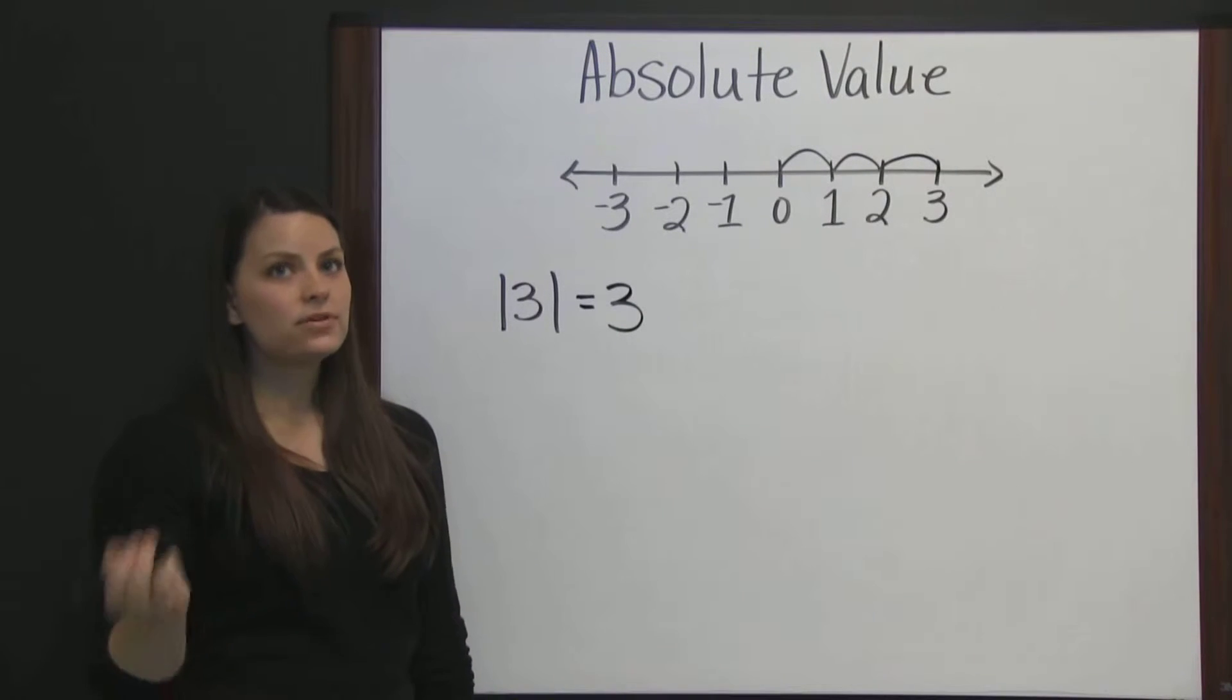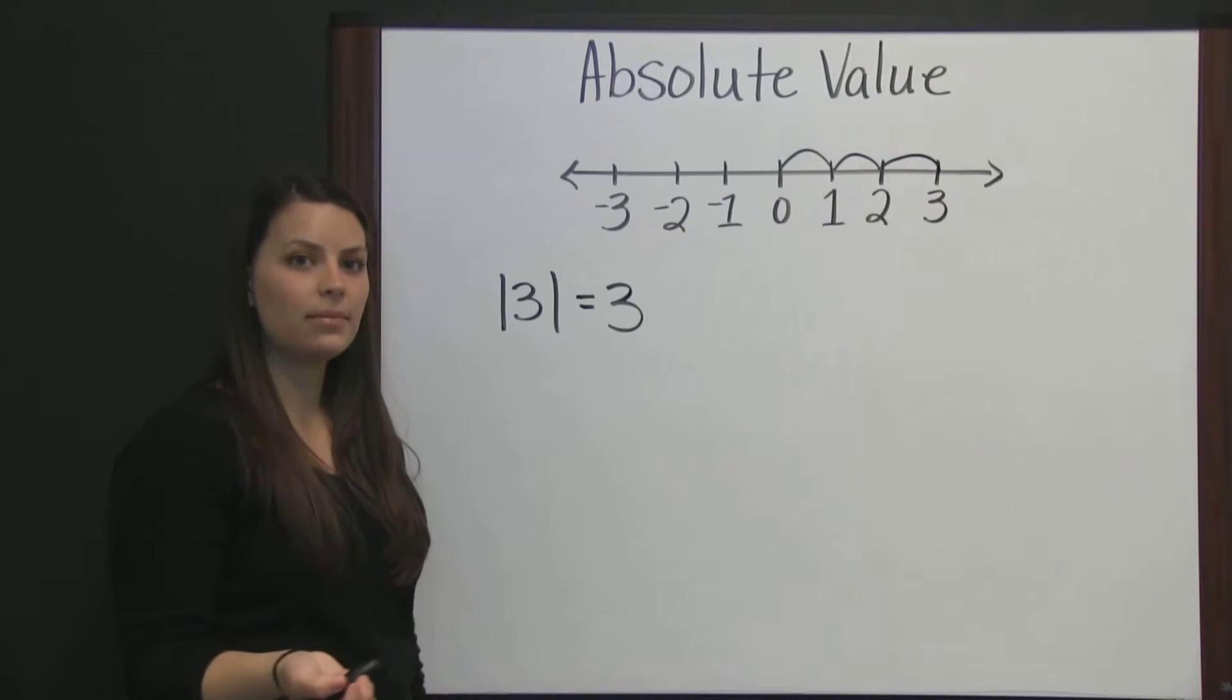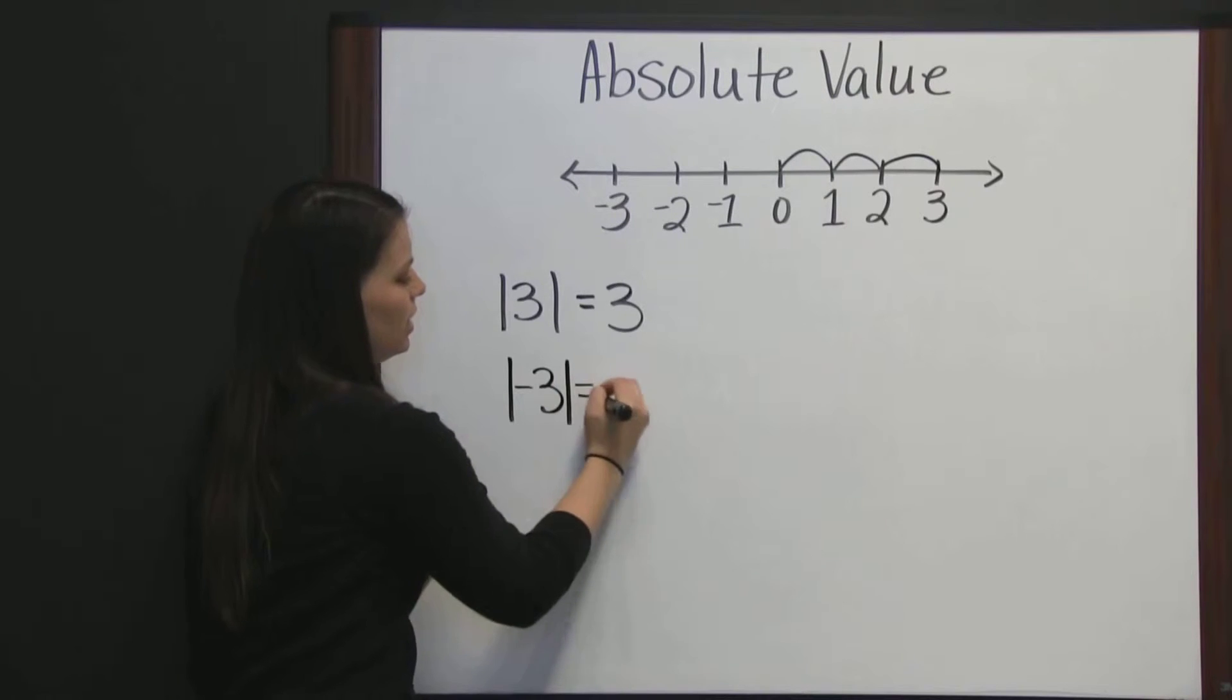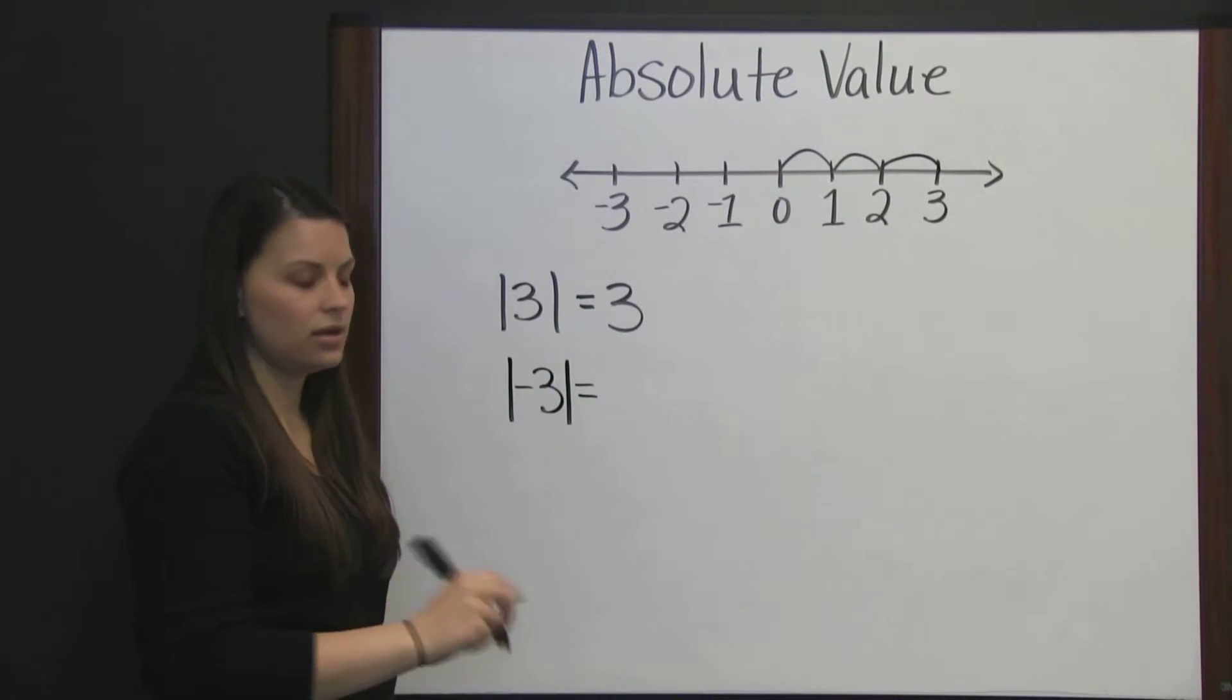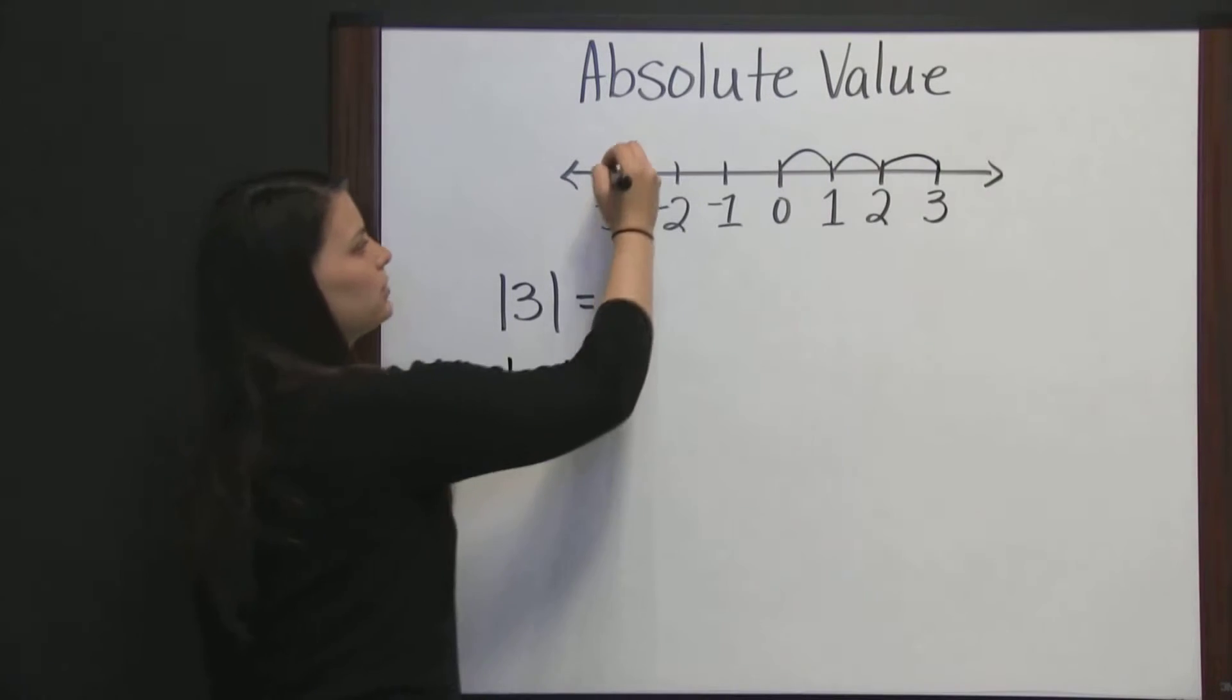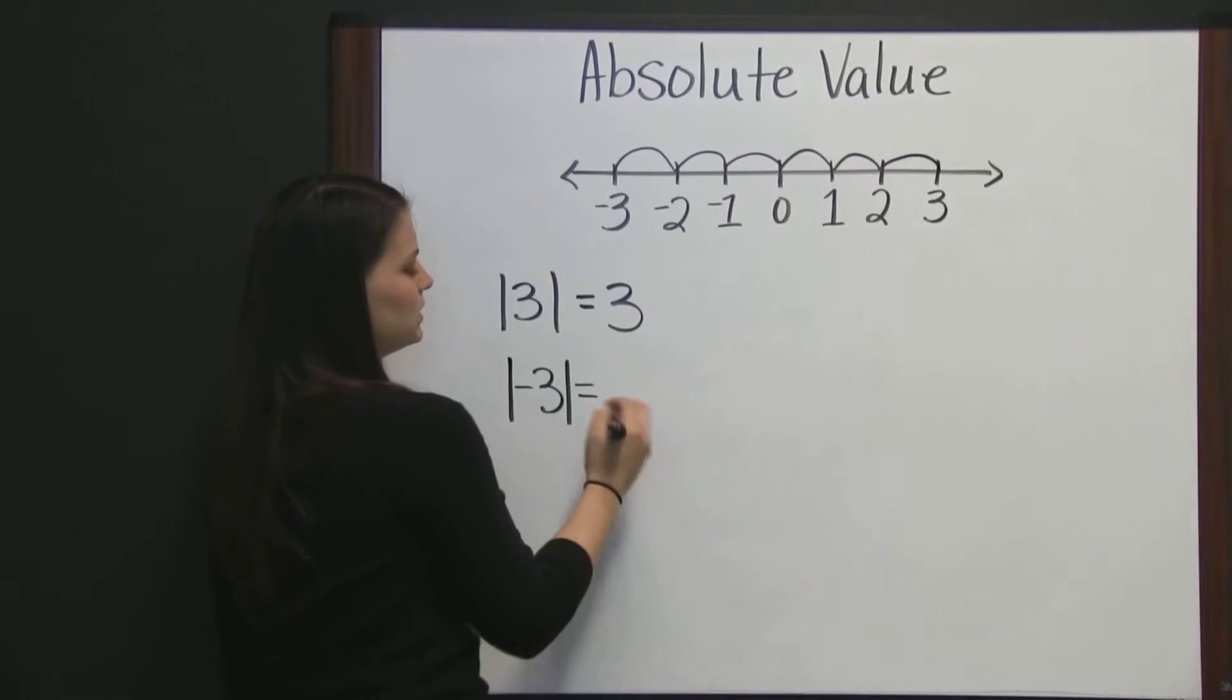The absolute value of a negative number and its positive counterpart are the same. So, the absolute value of negative three is also three, because negative three is also three places from zero. One, two, three places from zero.